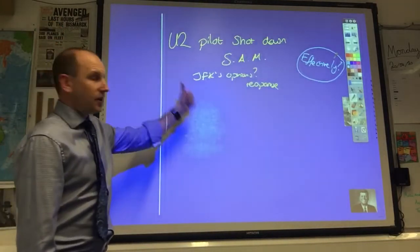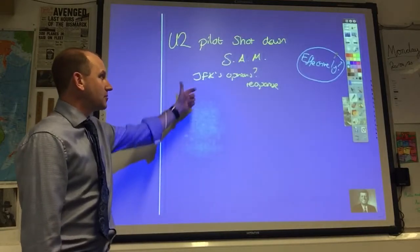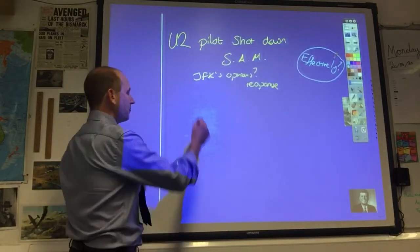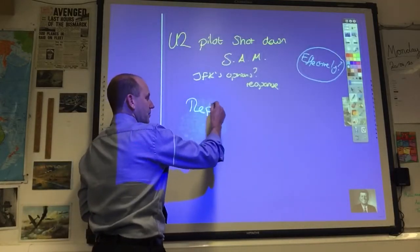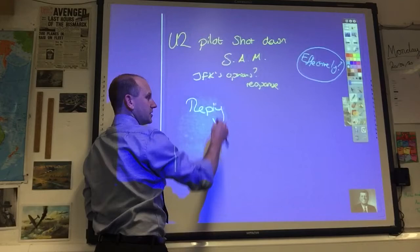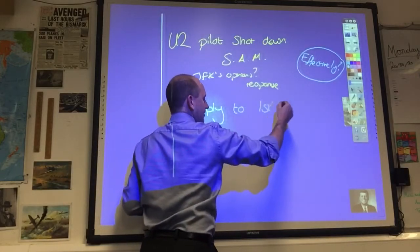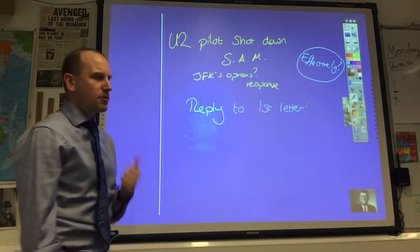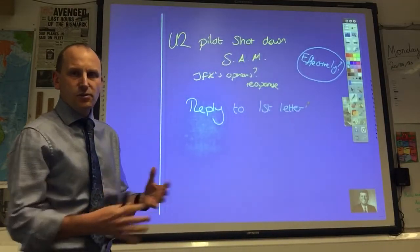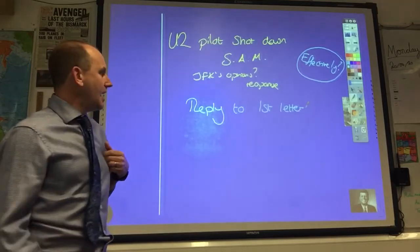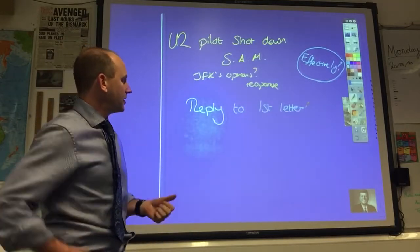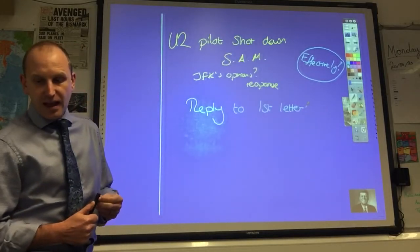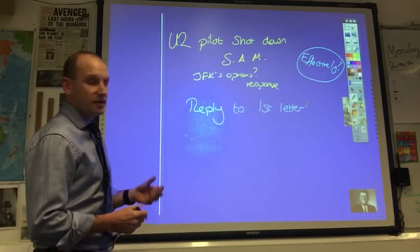So, with this in mind, you've got the soft letter on the table, the hard letter on the table, you've got potential military comedown. Kennedy then takes Bobby Kennedy's advice, and what they decide to do is they reply, they don't retaliate, but they reply to the first letter. They ignore the second letter, they reply to the soft letter, and they say, yeah, that's fine, we won't invade Cuba if you take your missiles out. And they ignore the demand for Turkey. And Kennedy sends Bobby Kennedy, his brother, over to the Soviet ambassador to try and negotiate that deal. And they await Khrushchev's response.